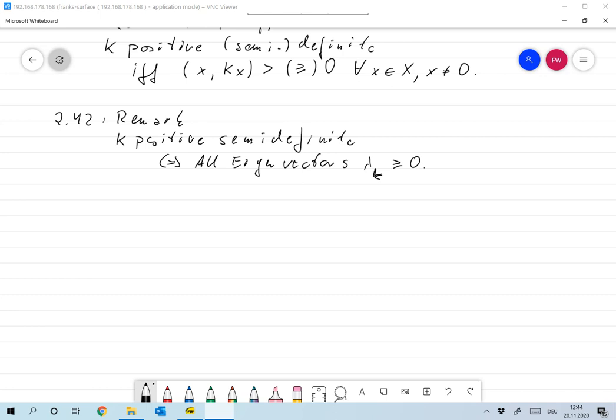And you just insert the representation from 2.40 and then it's there. And then that was number one, and number two, let K an operator from X to Y, and then K* K, K adjoint multiplied with K applied to K, is an operator that goes from X to X and it's positive semi-definite.